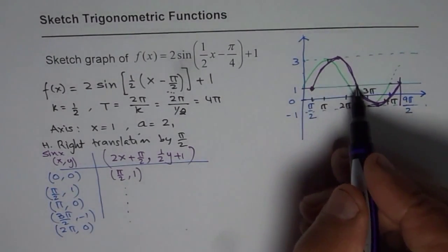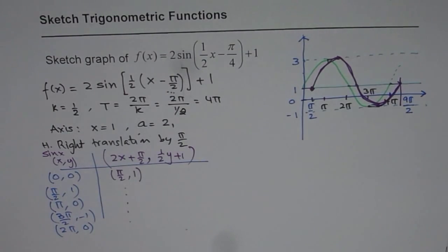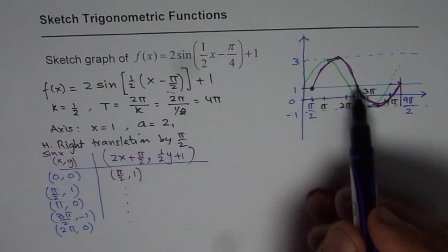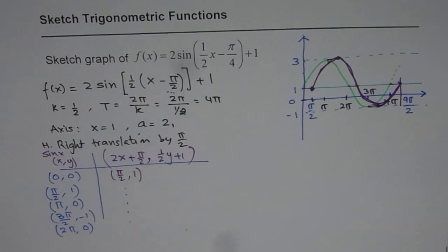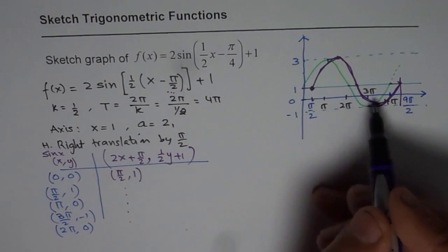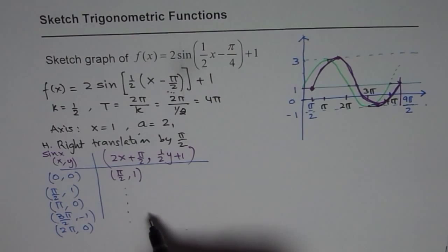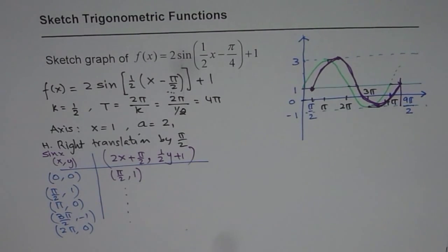And apply those transformations to those original points. Get the points on the graph and sketch your function. So that is an alternate method. So I like you to complete this table and check with your answer. Do you get those points or not? That will be a good exercise for you. I hope that helps.